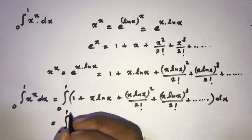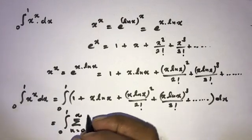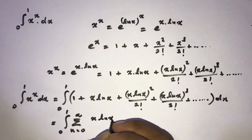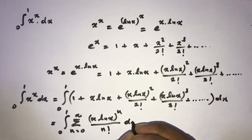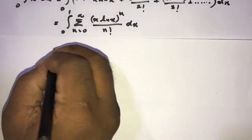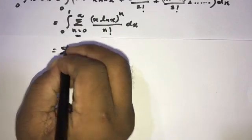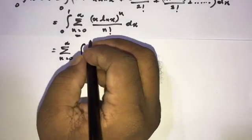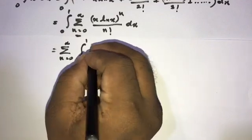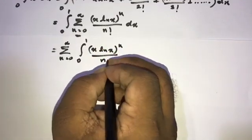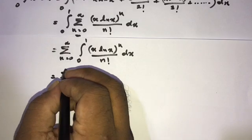We can write this as the sum from n equals 0 to infinity of the integral from 0 to 1 of (x·ln(x))^n over n factorial dx. We can move the summation outside the integral.